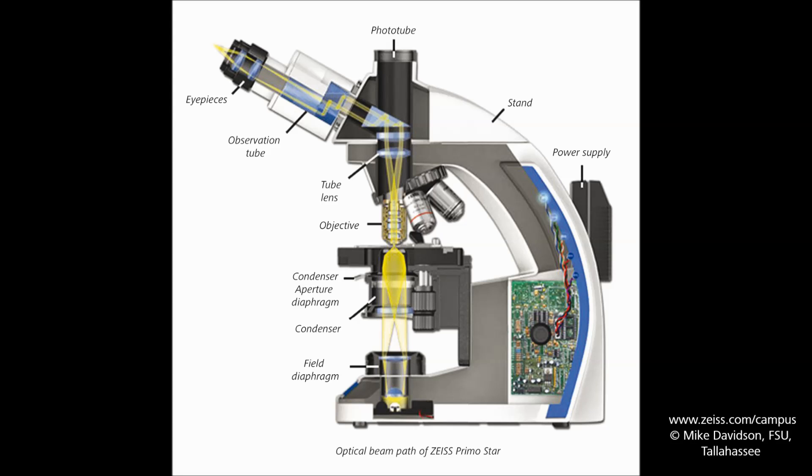It was August Kohler, an early member of the Carl Zeiss Corporation, who in 1893 developed the most important specimen lighting technique to date.